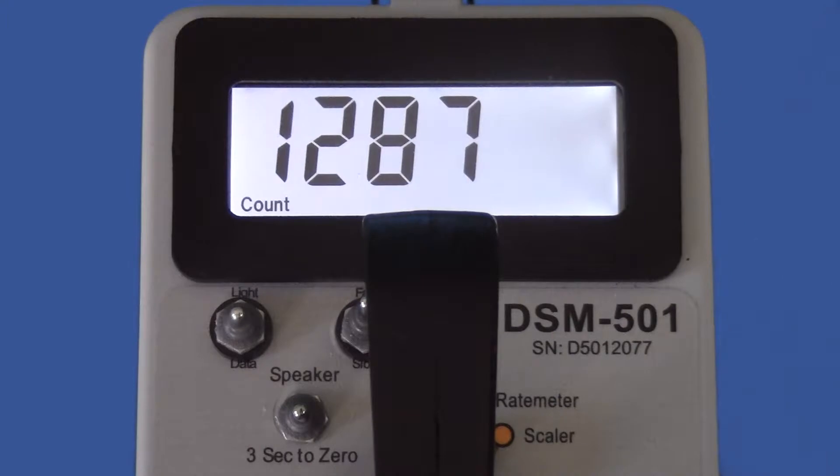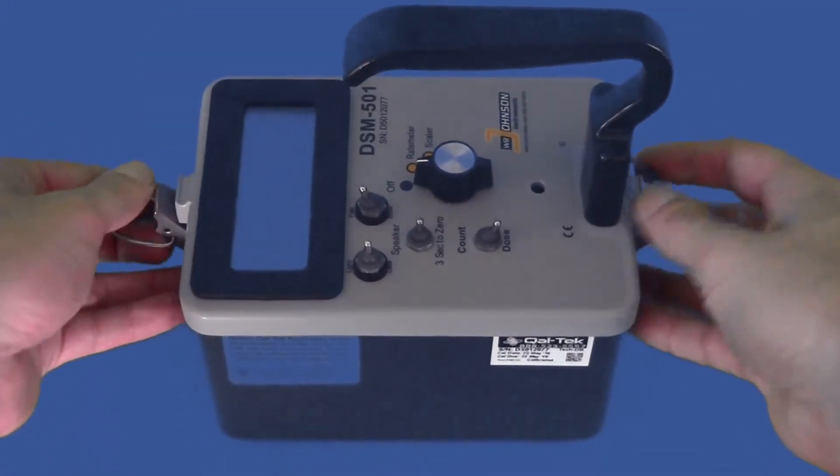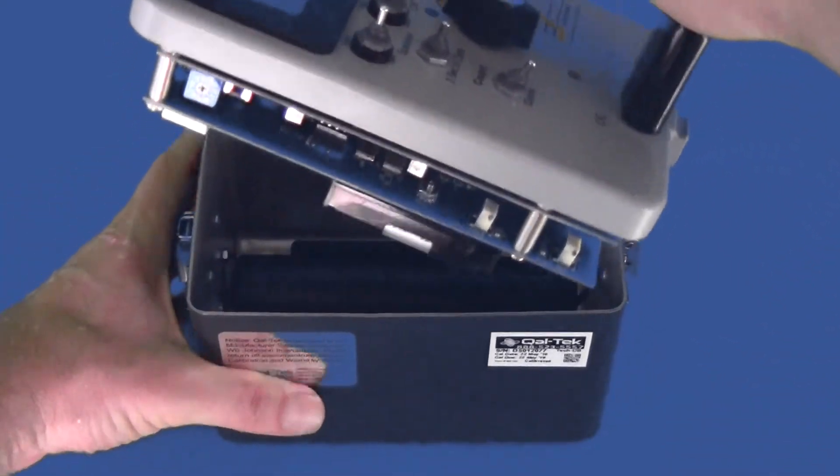For scalar mode, it is easy to make time interval adjustments. First, open the instrument, unfastening the latches at both ends.